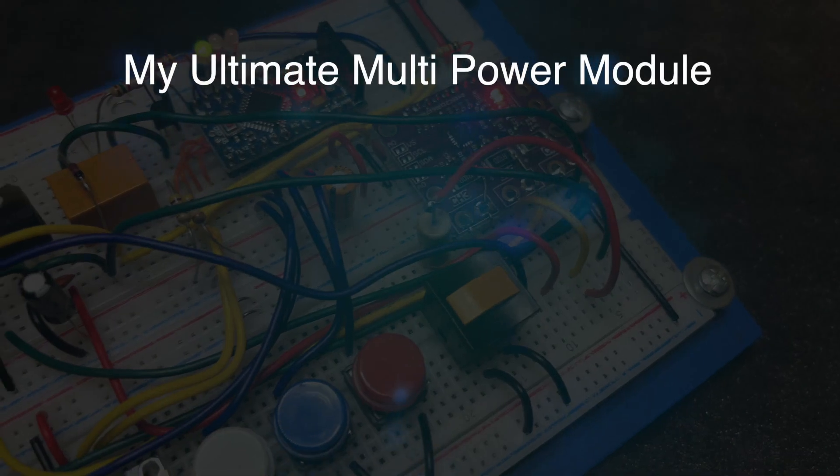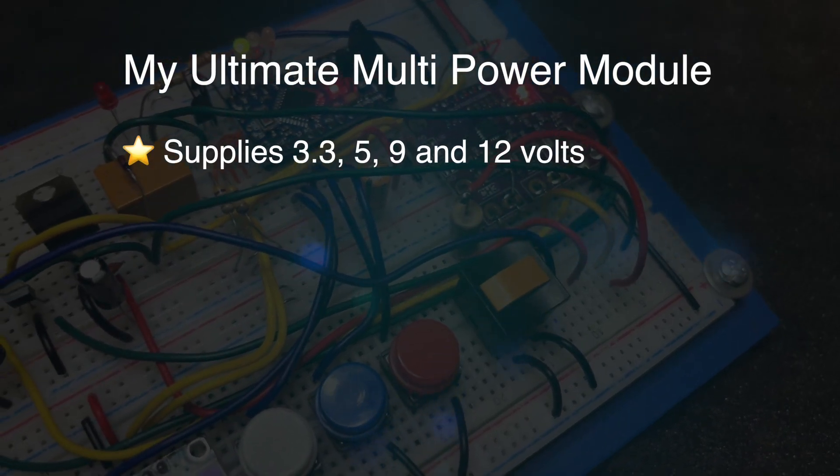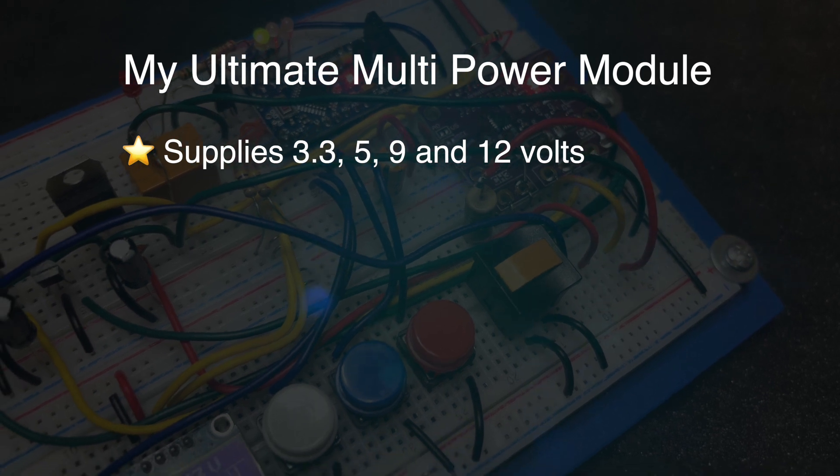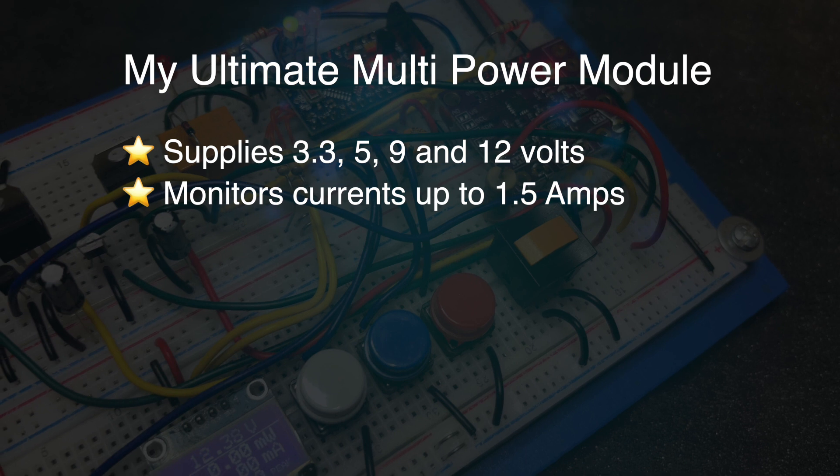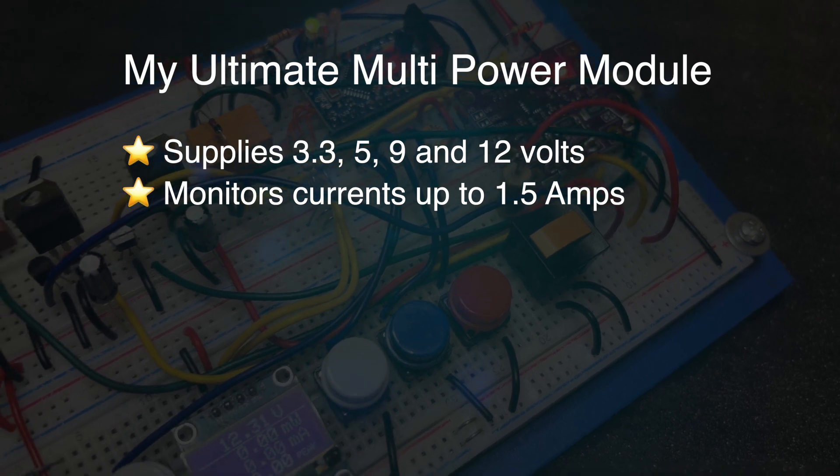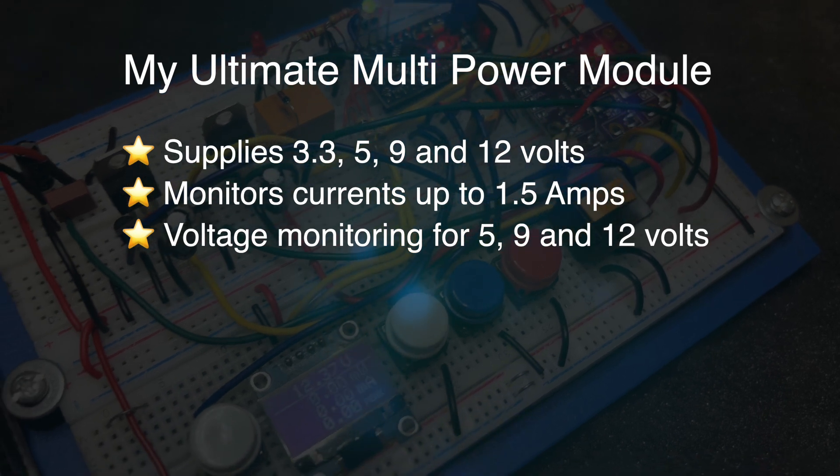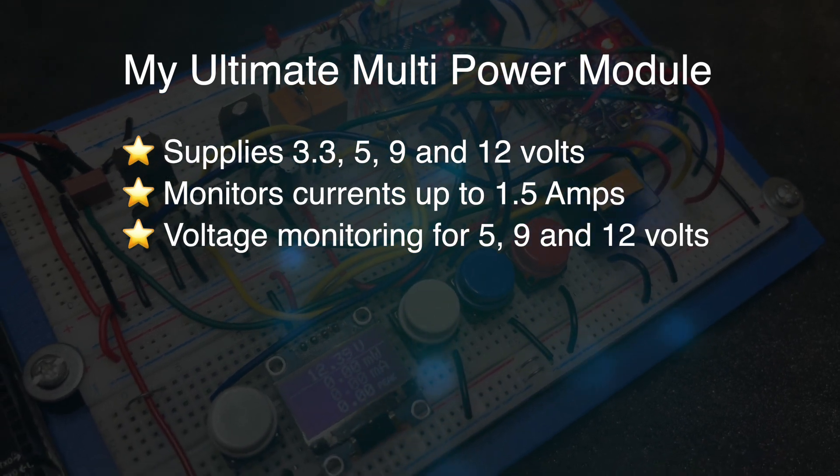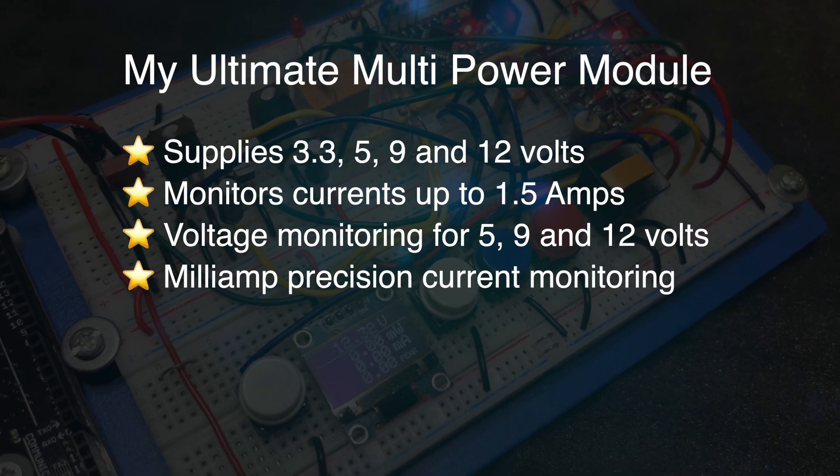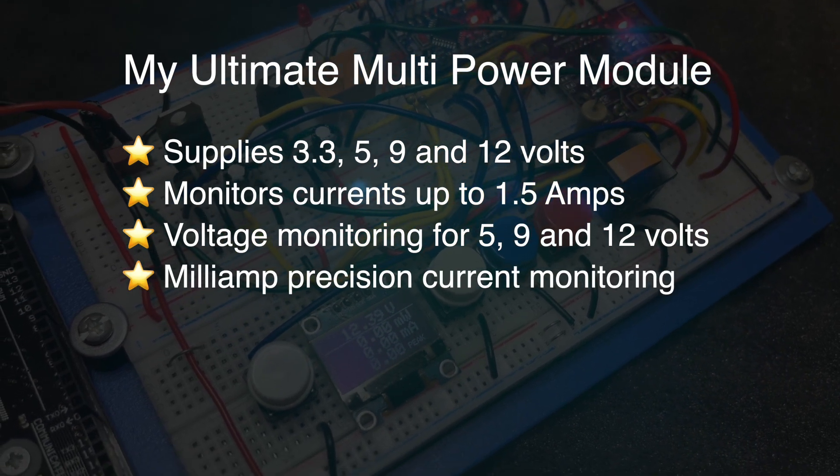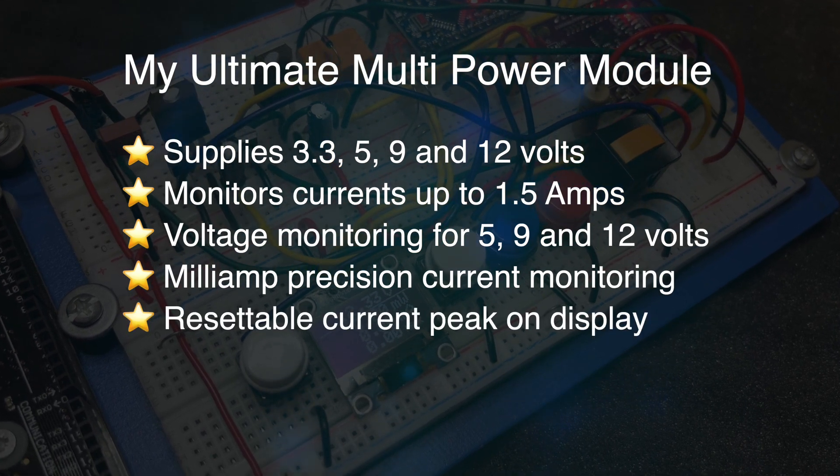So let's take a look again at that wishlist for the ultimate multi-power module. It supplies four voltages: 3.3, 5, 9 and 12 volts, and it works up to one and a half amps at least. Most of the time I'll be below one amp, by the way. Voltage monitoring for 5, 9 and 12 volts. We let go of the 3.3, because that's not used that often.